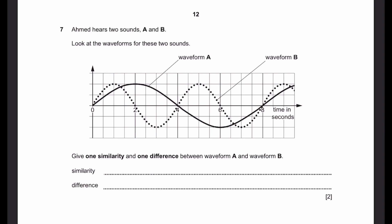Question 7. A and B are two sounds. Look at the waveforms for these two sounds. Waveform A and B are given. Give one similarity and one difference between waveform A and waveform B. We can see that waveform A and B both have the same amplitude because the displacement or maximum displacement from the starting point is the same in both directions. So they have the same amplitude.